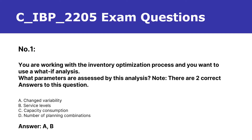Number 1. You are working with the inventory optimization process and you want to use a what-if analysis. What parameters are assessed by this analysis? Note: there are two correct answers to this question. A. Changed variability. B. Service levels. C. Capacity consumption. D. Number of planning combinations. Answer: A, B.